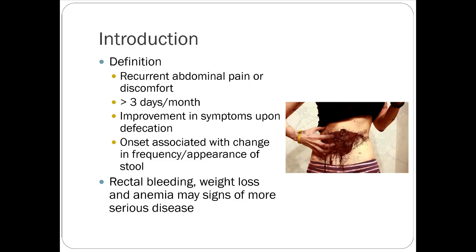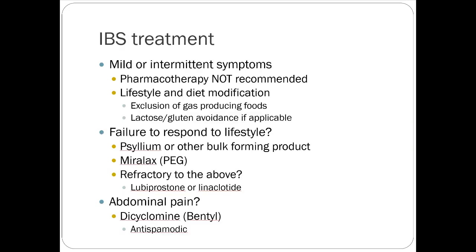IBS — just a couple quick slides. IBS is not similar to UC or Crohn's, it's in a different subgroup. It's usually associated with idiopathic abdominal pain — patients don't really have a clear trigger. In severe cases you can see rectal bleeding, weight loss, and anemia. For mild IBS there's no particular pharmacotherapy — usually dietary and lifestyle modifications first. Failure to respond leads to bulking agents like fiber supplements, Miralax, or more advanced options like lubiprostone or linaclotide.